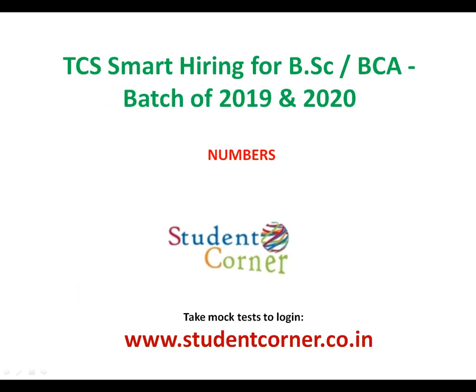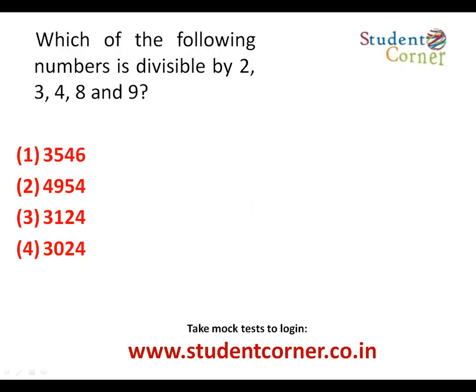Let us start a topic called numbers and number system. The first question is: which of the following numbers is divisible by 2, 3, 4, 8, and 9? These are basic divisibility rules. The peculiarity here is 8 and 9. For 8, the last three digits should be divisible by 8. Observing that, for the last three digits, only 3024 is exactly divisible by 8.